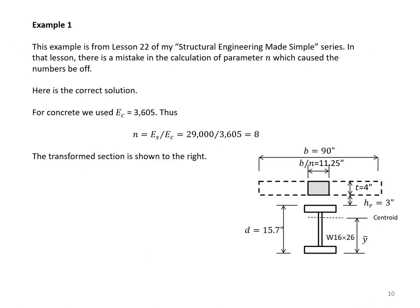This example is from Lesson 22 of my Structural Engineering Made Simple series. In that lesson, there is a mistake in the calculation of parameter N, which causes the numbers to be off. For concrete, we use modulus of elasticity equal to 3605 ksi. Therefore, the correct value for N should be 8; erroneously, a value of 9 was used in that video. In this corrected transform section, the effective width is reduced to 11.25 by dividing 90 by 8.